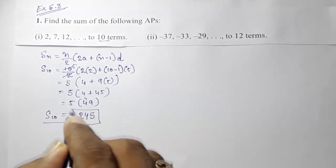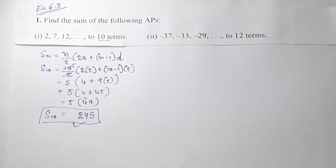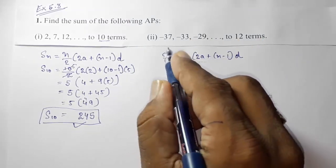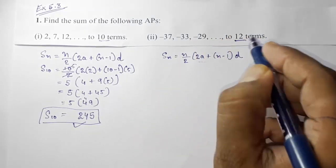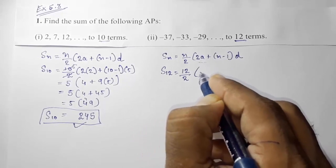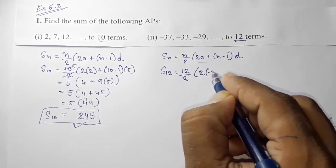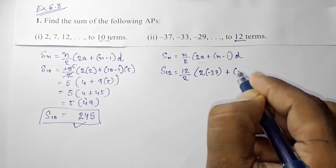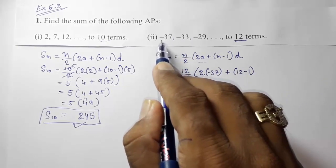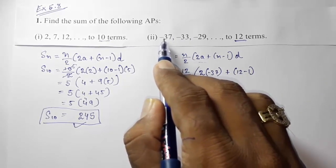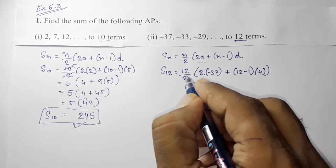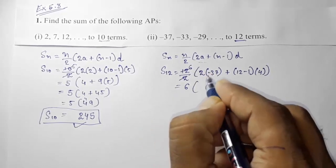Moving to Question 2, we use the same formula. We want to find the sum of 12 terms, so S12 = 12/2 × (2×(−37) + (12−1) × d). The first term is −37. The common difference: −33 − (−37) = −33 + 37 = 4, so d = 4.